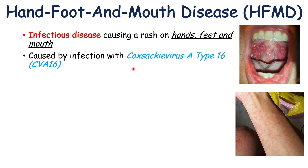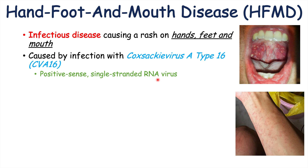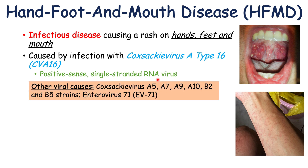CVA16 is a positive-sense single-stranded RNA virus. Although most cases of hand, foot, and mouth disease are caused by Coxsackie virus A type 16, there are other viruses that can cause this condition as well.